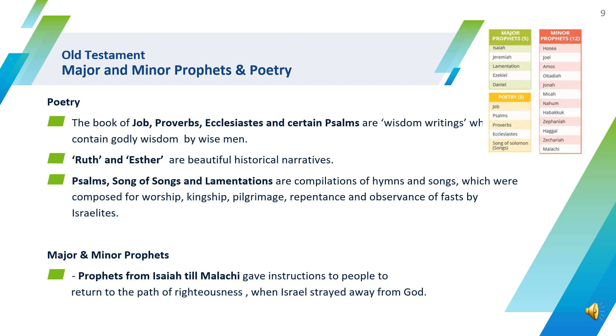The final category in the Old Testament are the major and minor prophets. Prophets from Isaiah till Malachi gave instructions to people to return to the path of righteousness when Israel strayed away from God.